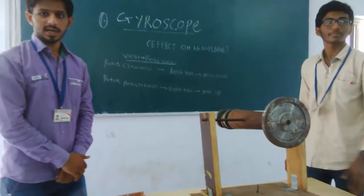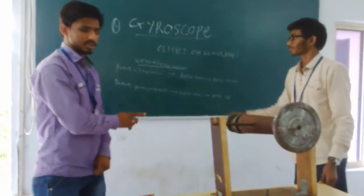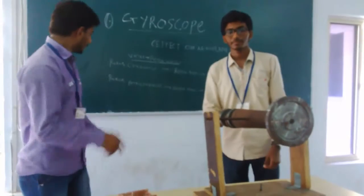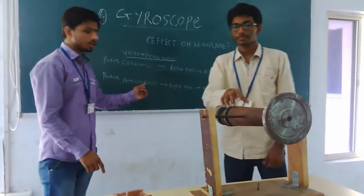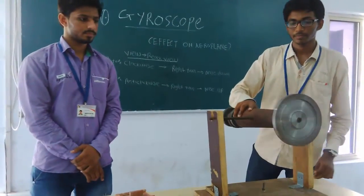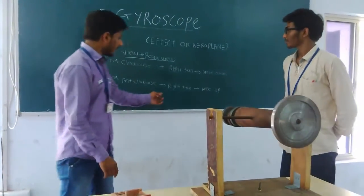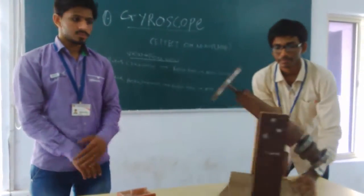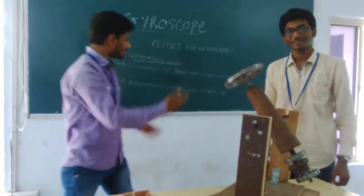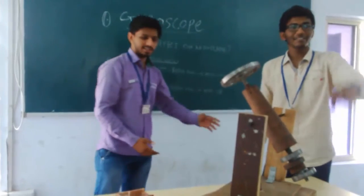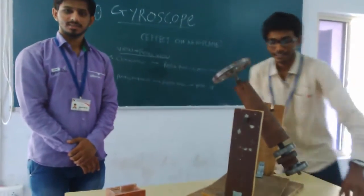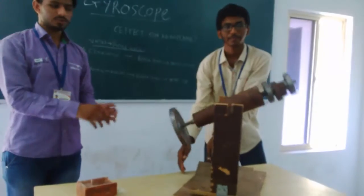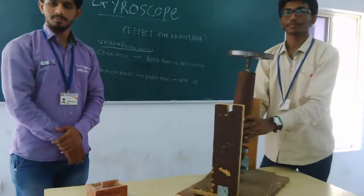Now the second one is from the rear view. The rotor is rotating in the right direction. Now on a right turn, what will happen? The nose will go up and the tail will go down. And when turned left, the nose will go down and the tail will go up.